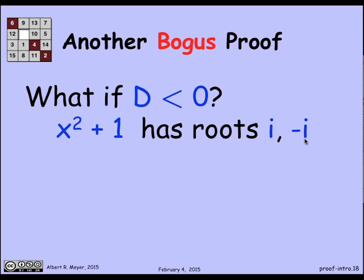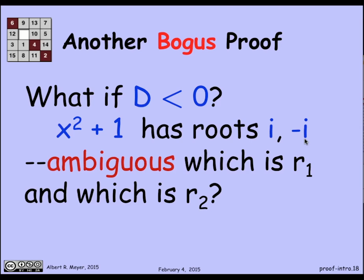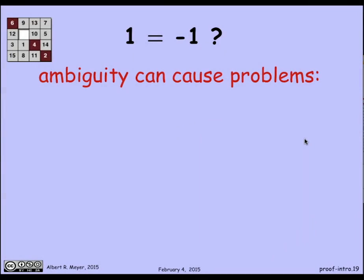And so we have an ambiguity about which one is r1 and which one is r2. It doesn't hurt at all for the theorem that r1 and r2 are different, and so there are two roots. But ambiguity can be problematic. And let me give you an illustration of that.